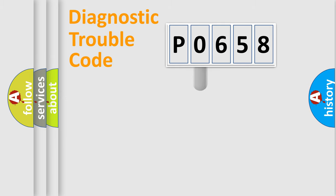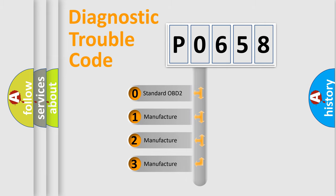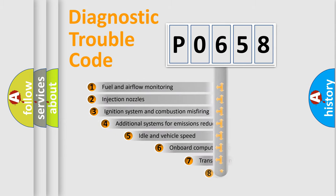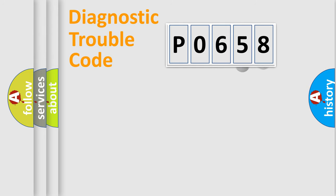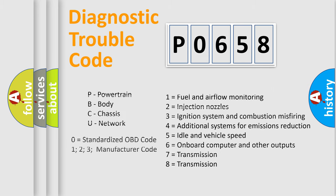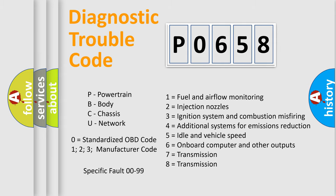This distribution is defined in the first character of the code. If the second character is expressed as zero, it is a standardized error. In the case of numbers 1, 2, or 3, it is a more specific expression of a car-specific error. The third character specifies a subset of errors. This distribution is valid only for the standardized DTC code, and only the last two characters define the specific fault of the group.